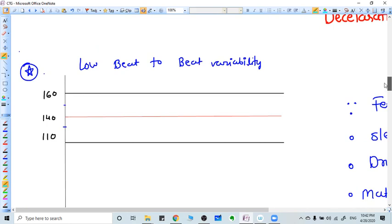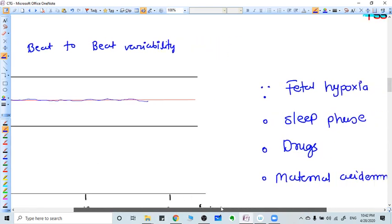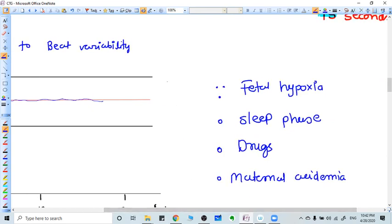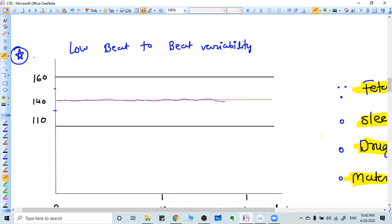What is low beat-to-beat variability? For example, the heart rate is just like a straight line. No beat-to-beat variability or very less, less than 5. What are the causes of low beat-to-beat variability? Fetal hypoxia. If the baby is sleeping, it can happen if the baby is sleeping. Fetal hypoxia, ingestion of some drugs, maternal acidemia. In all these cases, what we find is a very low beat-to-beat variability of fetal heart.